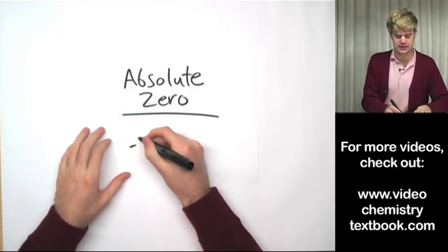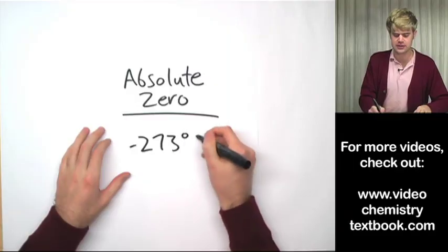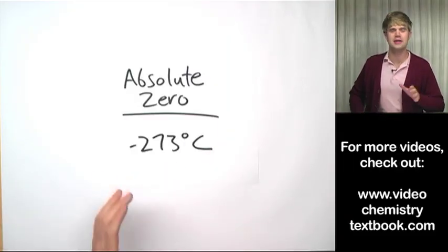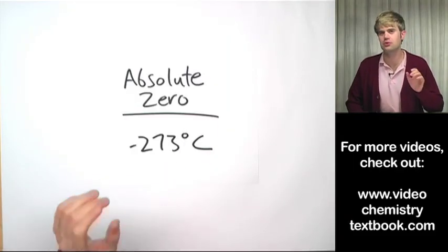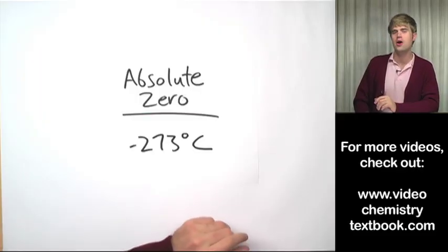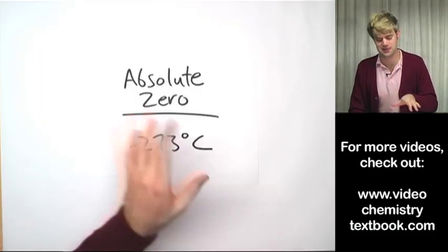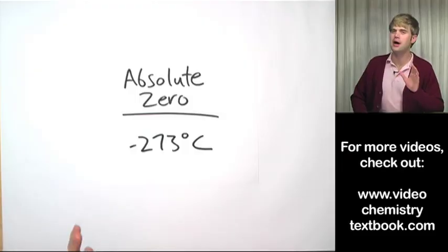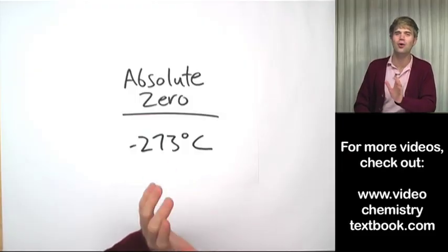Absolute zero is negative 273 degrees Celsius and it's the coldest possible temperature in the universe. Which means that if the temperature is absolute zero, it is impossible for it to get any colder.